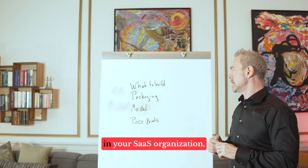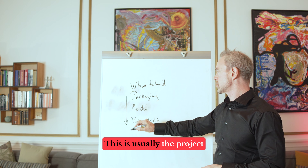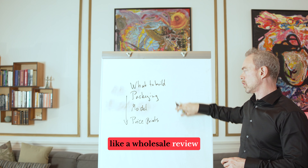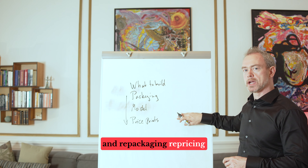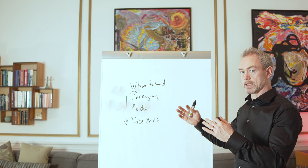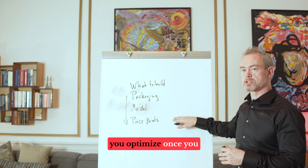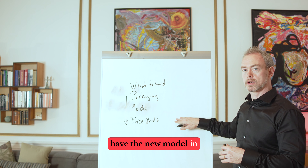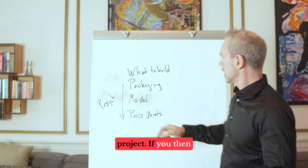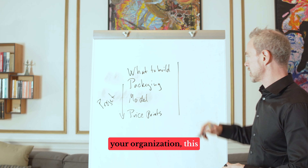If you want to run a pricing project in your SaaS organization, you start at the top of the chain and run down. This is the project basis — you do a wholesale review and repackaging, a repricing of your product, and you get to a new level. You actually focus less on price points during this stage. Price points become what you optimize once you have the new model in the market.